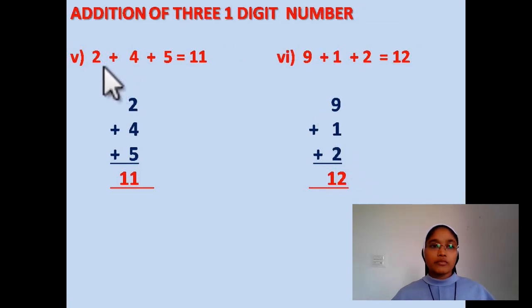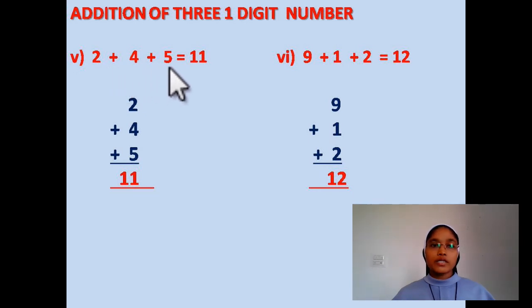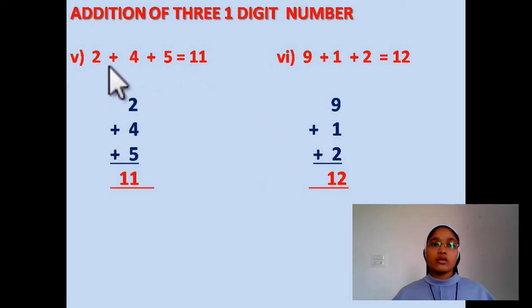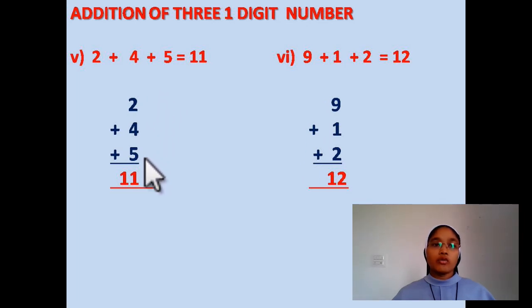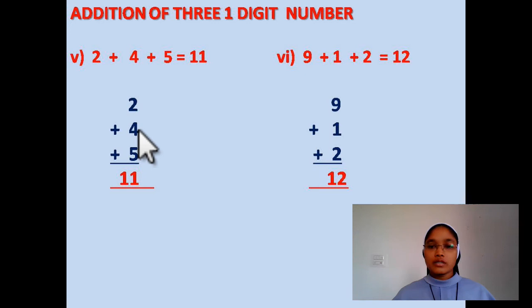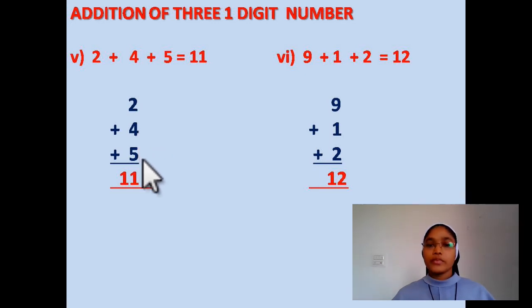Question number 5: 2 plus 4 plus 5, equal to 11. Dear students, here also you have to arrange this number by writing one below the other and let us add it. 2 plus 4 is 6, 6 plus 5 is 11. So your answer will be 11.